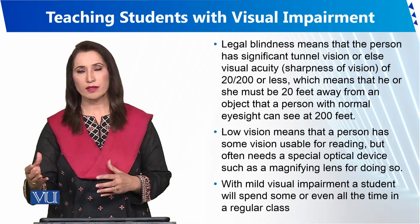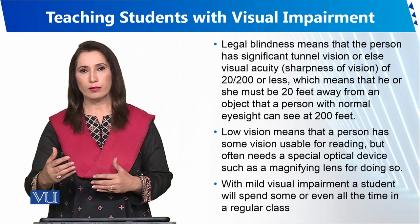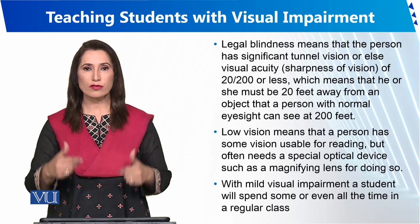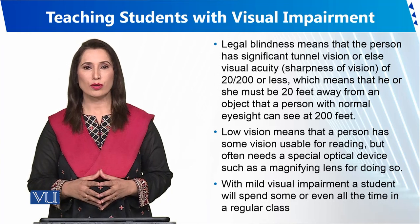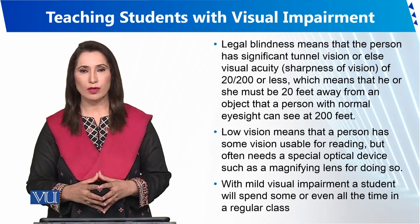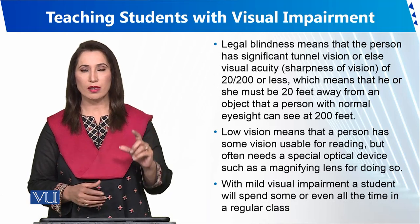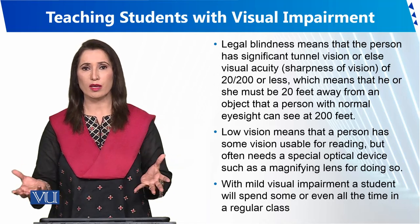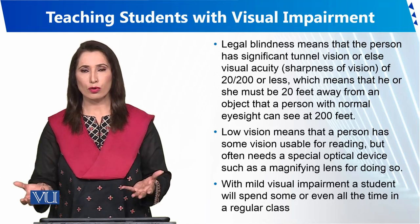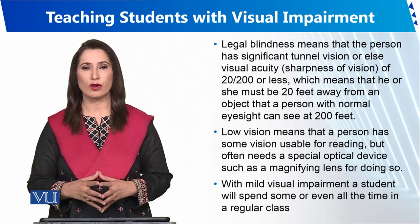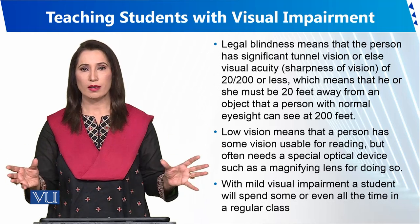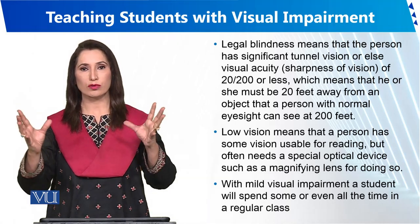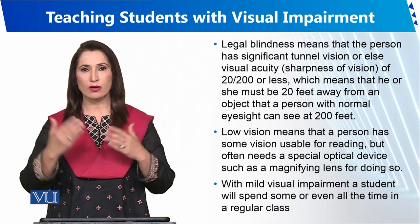At home, parents should reduce children's interaction with electronic devices and limit screen time. This should be done forcefully if necessary, because it is a matter of the child's health. Parents should show strict discipline, fix a time limit of one hour, and for children whose eyesight has weakened, encourage indoor games like table tennis or ludo where the whole family participates, to divert the child's attention away from the mobile phone.